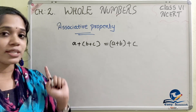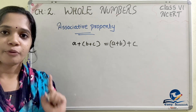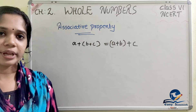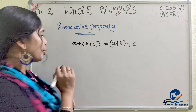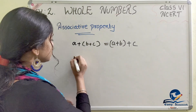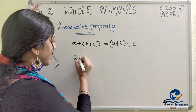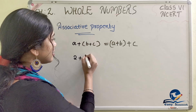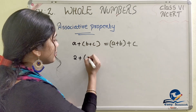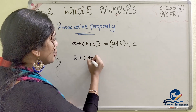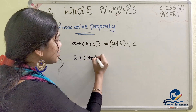Addition is associative for whole numbers. Let's look at this with numbers: 2, 3, 4.